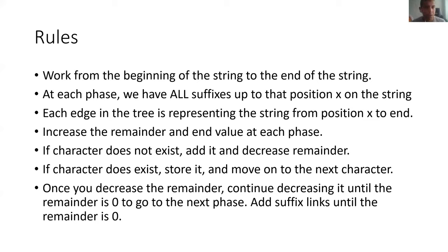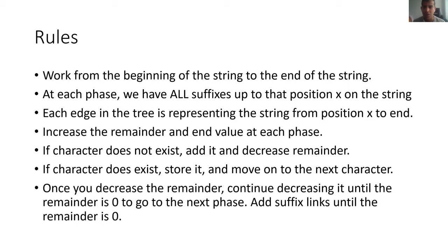You start by working your way from the beginning of the given string to the end, traversing each letter once — n times. That's why it's an O(n) algorithm. At each phase, we make sure that if we've traversed through the first three characters, then we have all the suffixes from those first three characters already inserted into the tree. Instead of representing each edge as a letter or list of letters, each edge is only represented as two points: the beginning index and the endpoint of the original character.